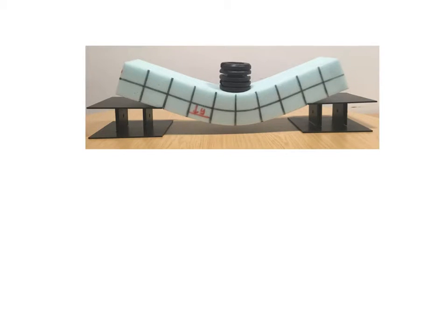What we've got here is a foam beam supported at two points by supports that allow the beam to rotate but prevent it from moving left, right, up, or down. In the middle, we've got a stack of weights which provide what's close to a point load on the beam.